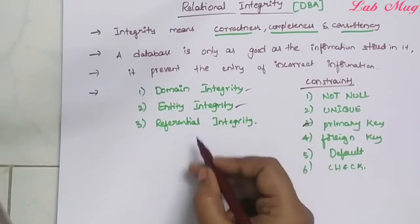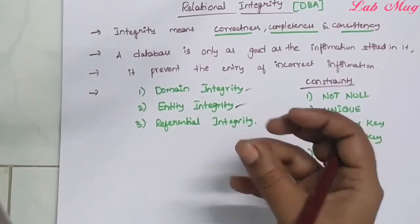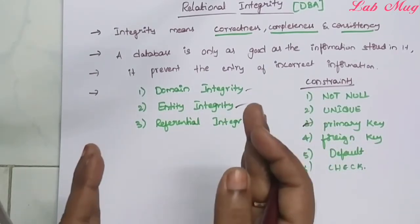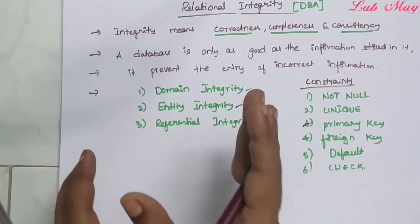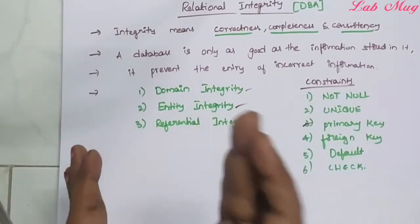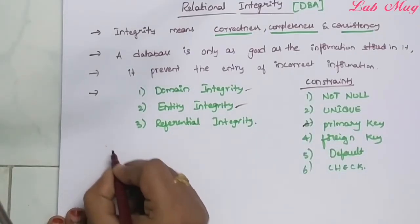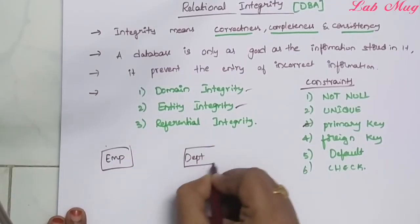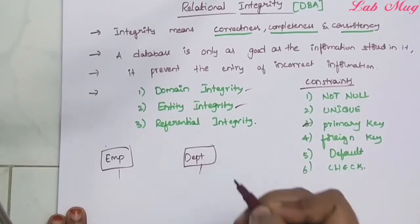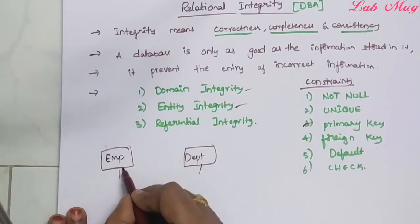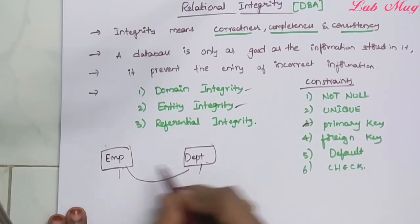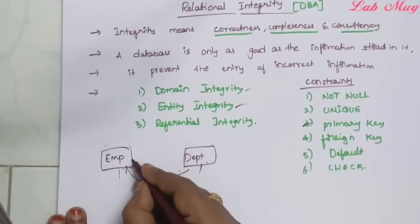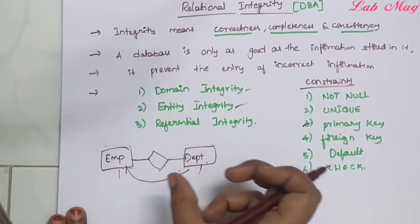After that, referential integrity. Referential means reference. The reference is the correctness and consistency of relationships between entities. Two entities are referenced. For example, employee is one table, department table is one entity. The employee table is one entity and department is one entity. The employee table is referenced by the department table — EMP is referred by the department table. These two entities are related.